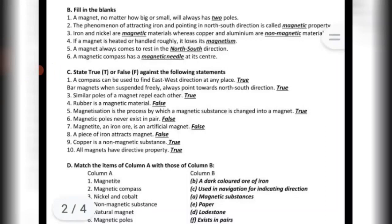Fill in the blanks. A magnet, no matter how big or small, will always have two poles. The phenomenon of attracting iron and pointing in north-south direction is called magnetic property.